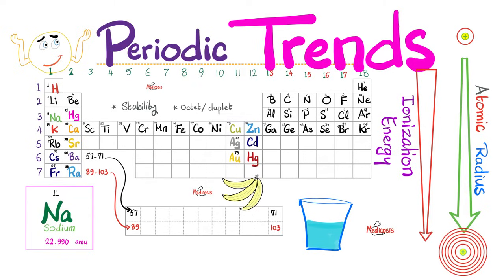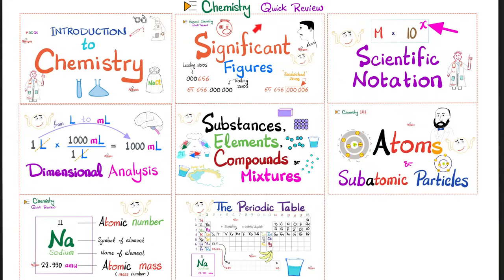Let's talk about the atomic radius. As you go down a group, the atomic radius keeps getting bigger and bigger. You go from this to this, because this one had only one shell, but here we have seven electron shells. So the trend is that the atomic radius increases down a group. And since it's a trend in the periodic table, it's called a periodic trend.